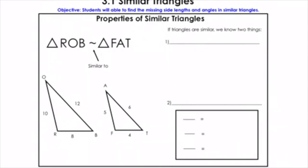We're dropping off from congruent triangles, because congruent triangles have all the same angles and all the same sides. Similar triangles — it's similar to that, but it's not the same. Similar triangles definitely have a lot of similarity to them. If you see these two triangles that we're looking at — Rob and Fat — they look the same, but one is just bigger than the other.